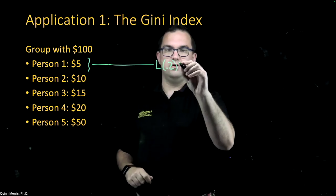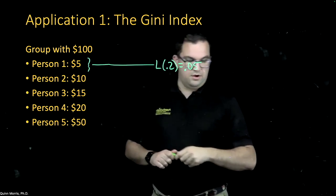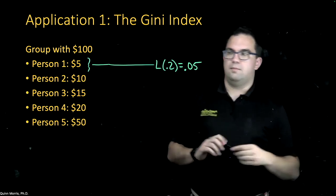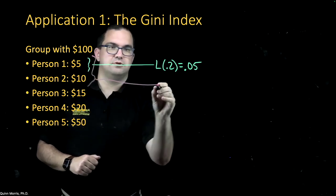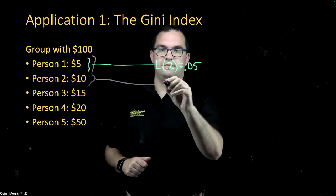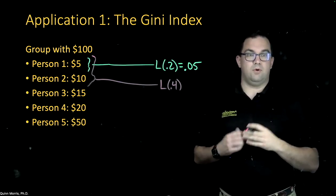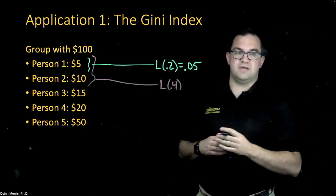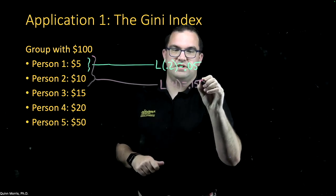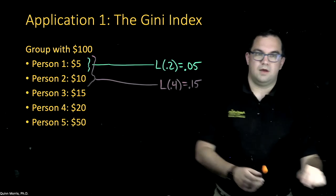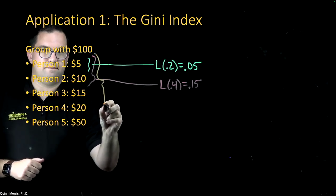So L(0.2) tells me what the bottom 20% of the population have as a percentage of total wealth. They have $5 of $100, so they have 5%. If I look at the bottom 2 people — persons 1 and 2 — they represent the bottom 40%. I can ask what percentage of the total wealth the bottom 40% have. They have collectively $15, which represents 15% of the total wealth.